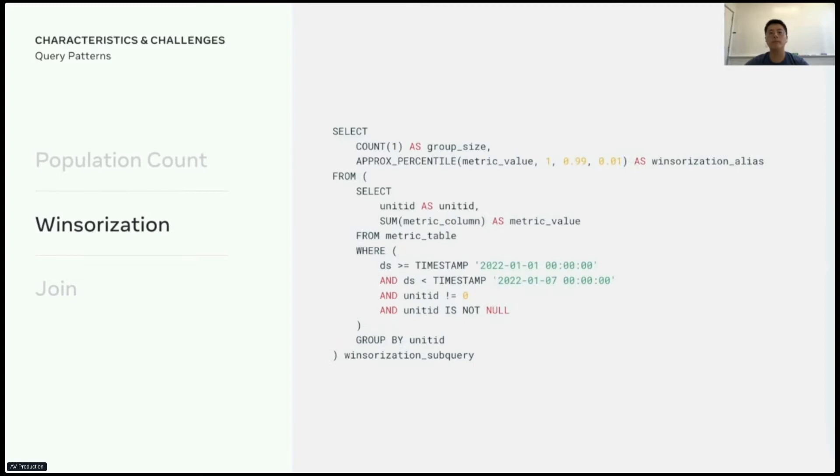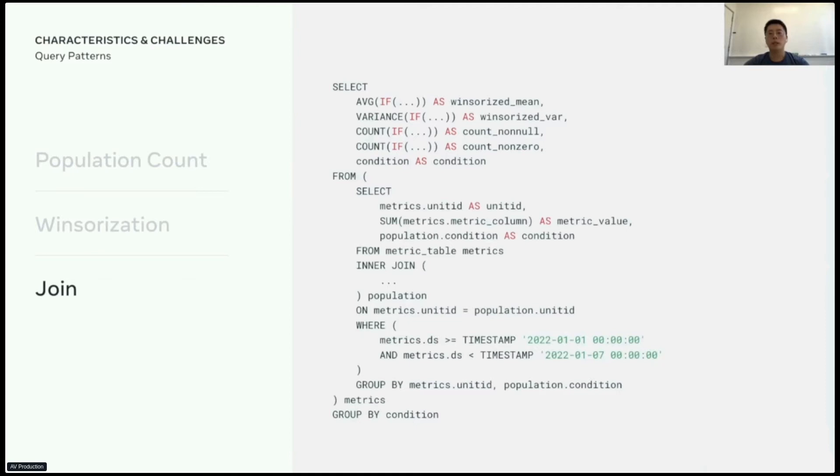Then we have winsorization. In this query pattern, approx_percentile is used to calculate the winsorization thresholds. So only the metric values within the thresholds will be considered for analysis, and the ones outside will be treated as extreme values and will not be used.